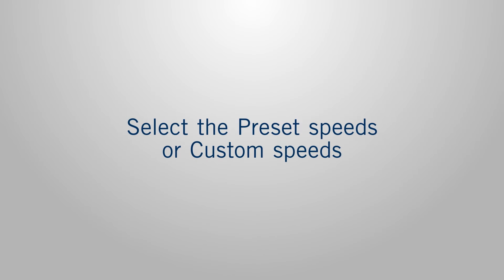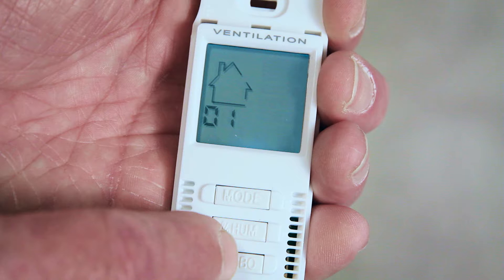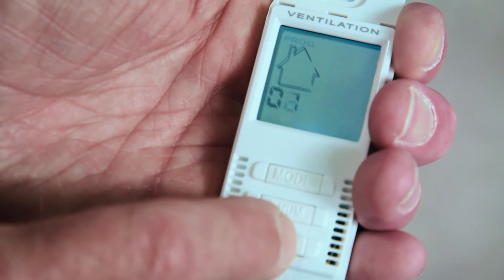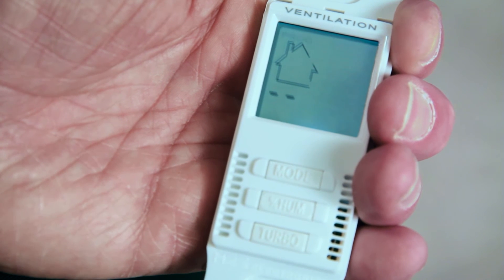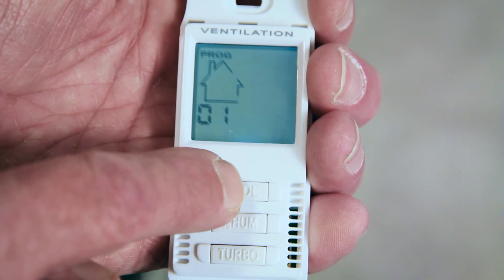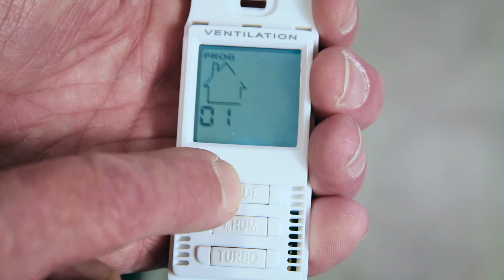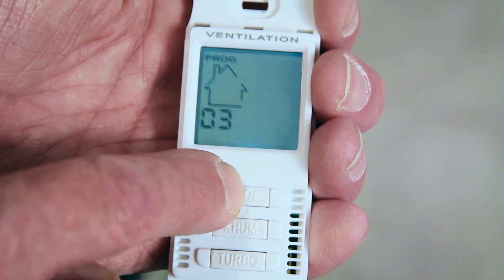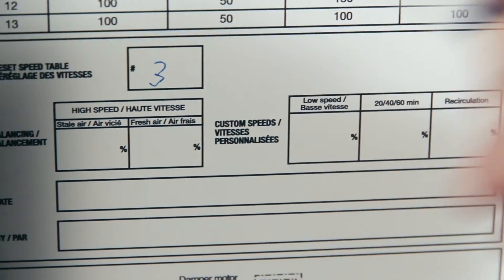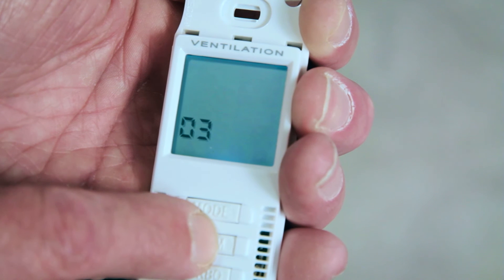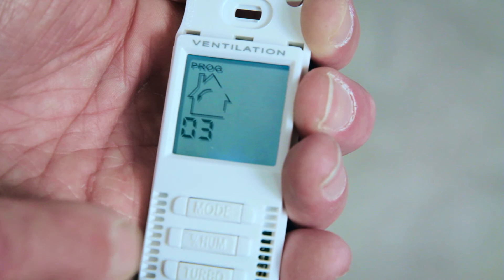01 speed value, which is a preset value, will appear on screen. Press on the lower button to lower the value in order to access custom speed settings. Press on the upper button to raise the value and reach the preset table value you need. Write the selected preset speed on the label as it will disappear by pressing the accept button. Press the middle button to accept the chosen selection.